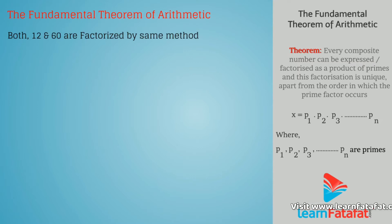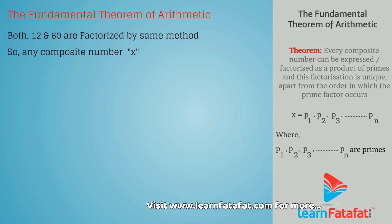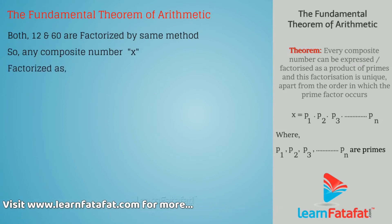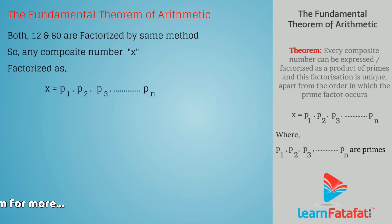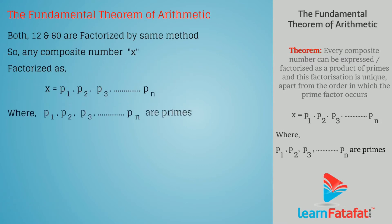Both 12 and 60 are factorized by the same method. So, we can say that any composite number x can be factorized as x is equal to p1 × p2 × p3 × ... × pn, where p1, p2, p3 up to pn are primes.